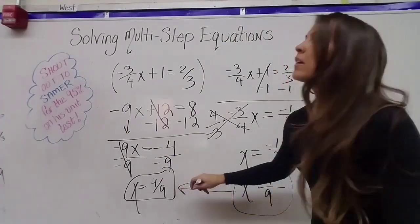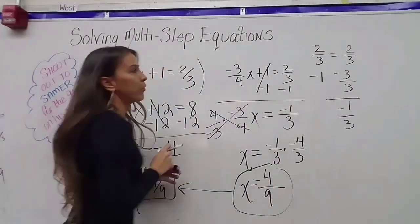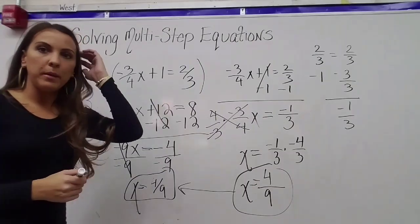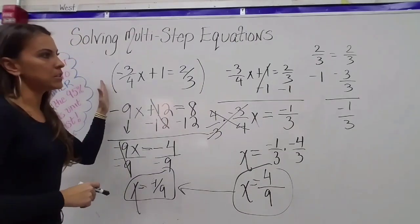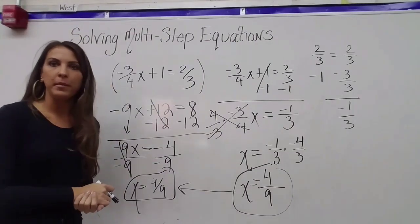So I will get negative one times negative four is four over three times three is nine. Same thing, different way. So you guys look at both ways and see which one works for you. I think that for people who don't love fractions, it's much easier to just wipe them out from the beginning.